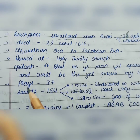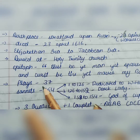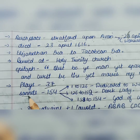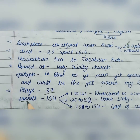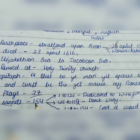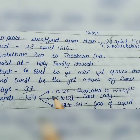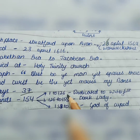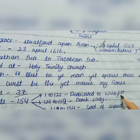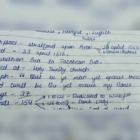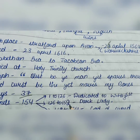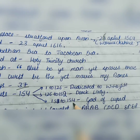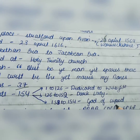William Shakespeare wrote 37 plays and 154 sonnets in his life. A sonnet is a poem of 14 lines. Of his 154 sonnets, sonnets 1 to 126 were dedicated to William Hazlitt, sonnets 126 to 152 were dedicated to the Dark Lady, and sonnets 152 to 154 were dedicated to the god Cupid.